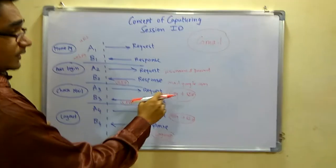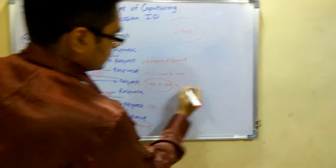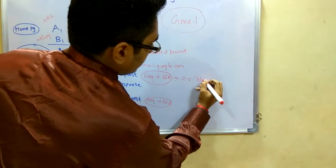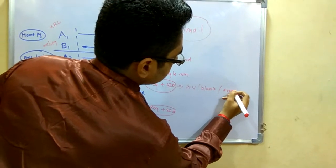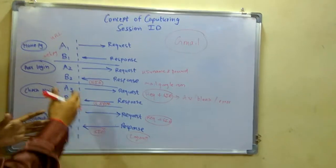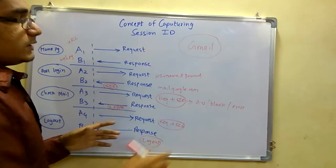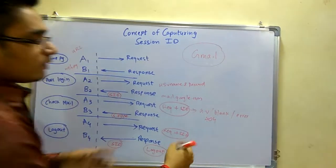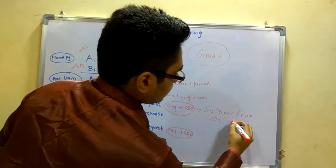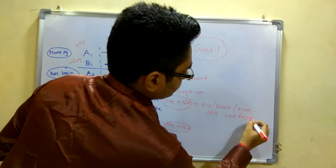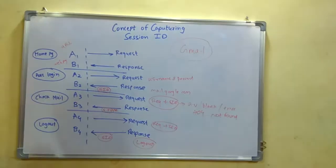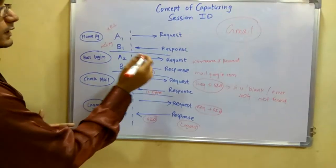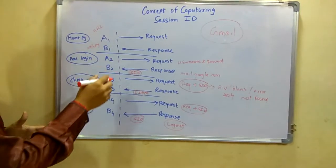Because a session ID is already generated one action above it, if you are capturing the session ID at the wrong step, the request plus that session ID would be a garbage value or a blank value, and thus it would result in an error. You will get a client error — a 404 not found error — and in this case you will be getting this kind of error.